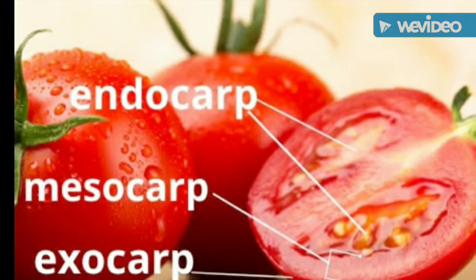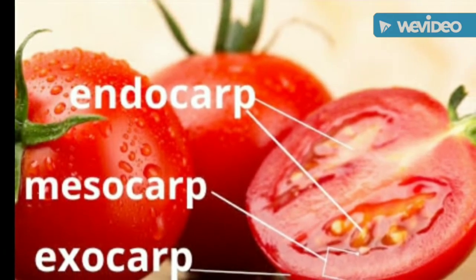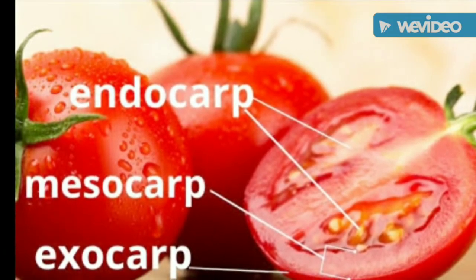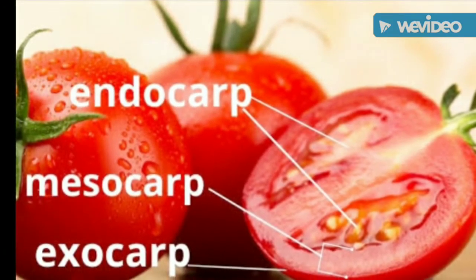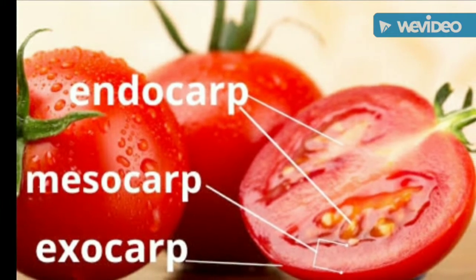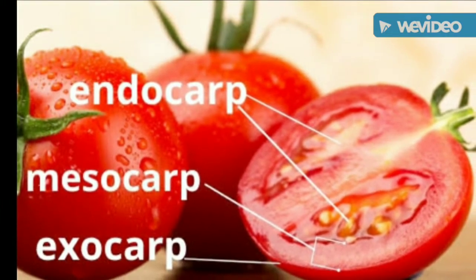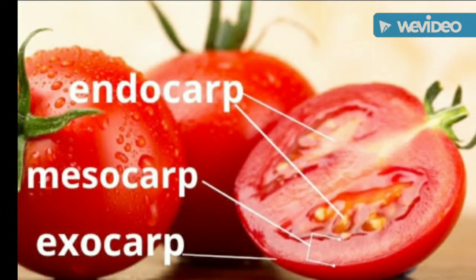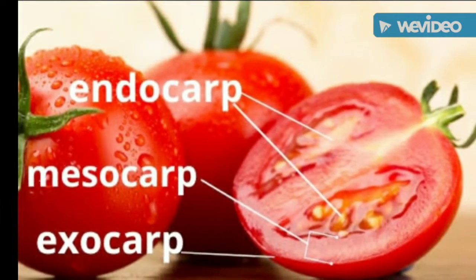Simple fruits are again divided into dry and fleshy. Fleshy fruits are berry, pome, pepo, hesperidium, and drupe. This one is a berry fruit — tomato.